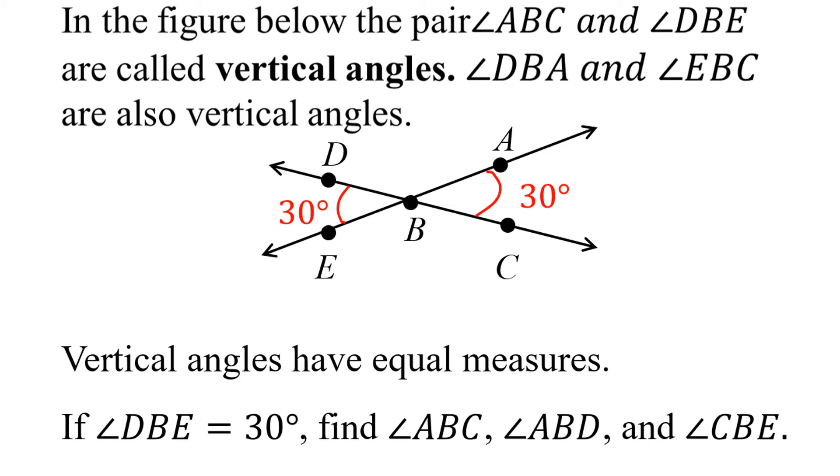But what about the other two angles? Well, keep in mind that we learned previously that a straight angle is 180 degrees. And angle ABC is part of that straight angle, and angle ABD is the other part. So together they have to add up to 180 degrees.